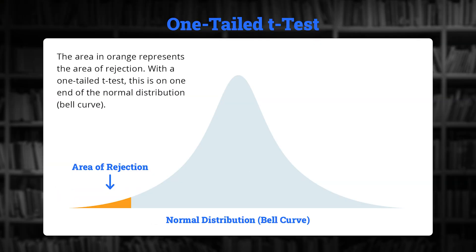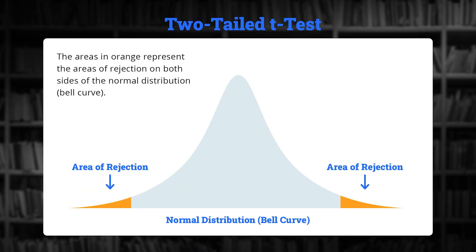One and two-tail t-tests are also something you're going to want to be familiar with. A one-tailed t-test is when the area of rejection is at one end or the other of a bell curve. With a two-tailed t-test, the area of rejection is going to be on both sides of the bell curve.